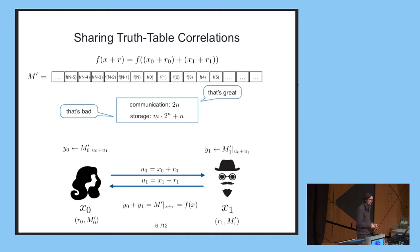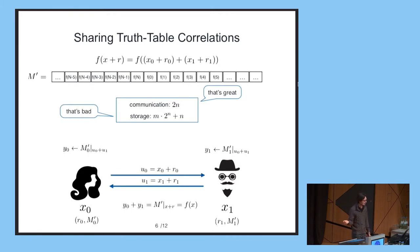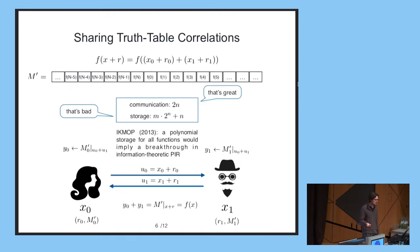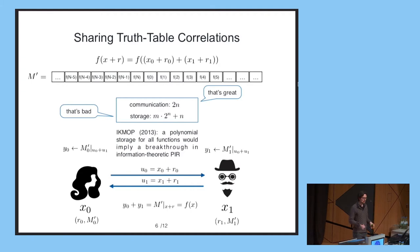So the natural idea, if we want to get sublinear communication in the correlated randomness model, is to start with this protocol and ask whether it's possible to make this storage polynomial instead of exponential. It turns out that it's unlikely to be easy, because it was proven in 2013 that if we could achieve polynomial storage for securely evaluating any function, that would imply a breakthrough result for some long-standing open problem related to the study of information-theoretic private information retrieval.